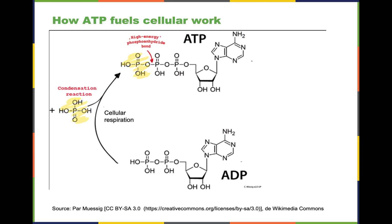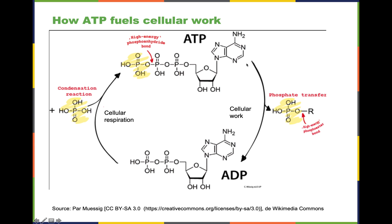How does the cell use ATP to fuel cellular work? It usually involves breaking the last phosphate in the chain and transferring it to another molecule. Our cells start with ADP — adenosine diphosphate — and through cellular respiration a phosphate is added to ADP, giving us this high-energy molecule ATP. When the time comes for the cell to do chemical or mechanical work, the cell takes this last phosphate and transfers it to another molecule, represented here as R. This molecule could be a chemical or a protein — adding a phosphate to a protein changes its conformation and drives some process in the cell.